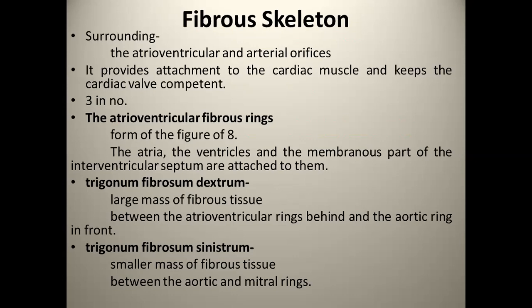Next होता है Trigonum Fibrosum Dextrum — यह एक large mass of fibrous tissue होता है. ये Atrioventricular ring और Aortic ring के बीच में होता है. ये right Atrioventricular ring के पीछे रहेगा और Aortic ring के सामने होगा. इन दोनों के बीच में Trigonum Fibrosum Dextrum नाम का fibrous tissue होता है.